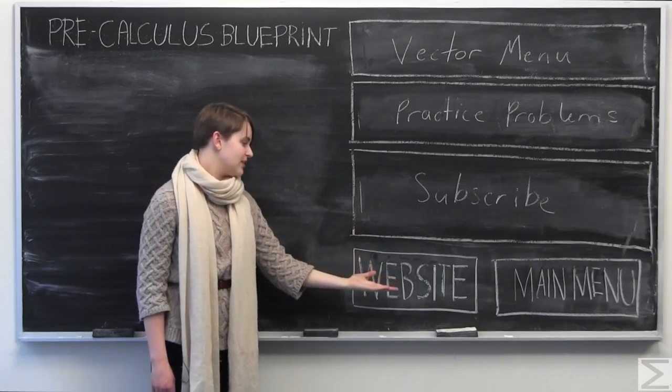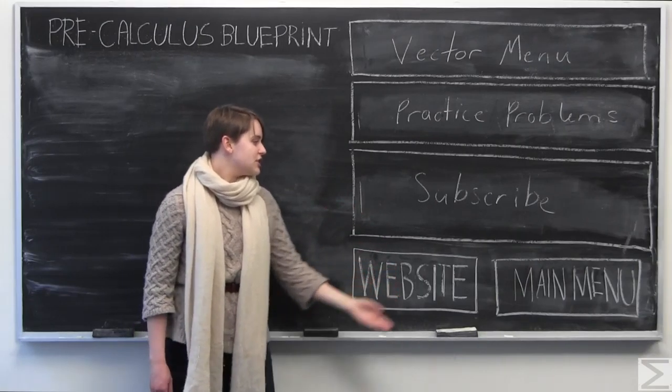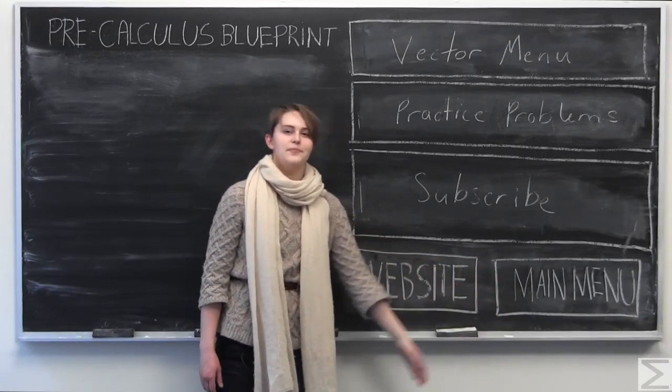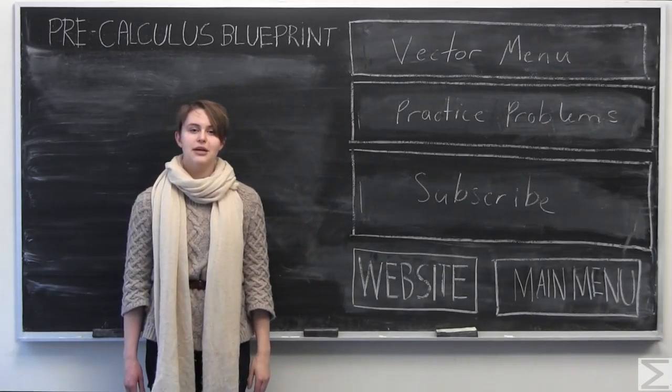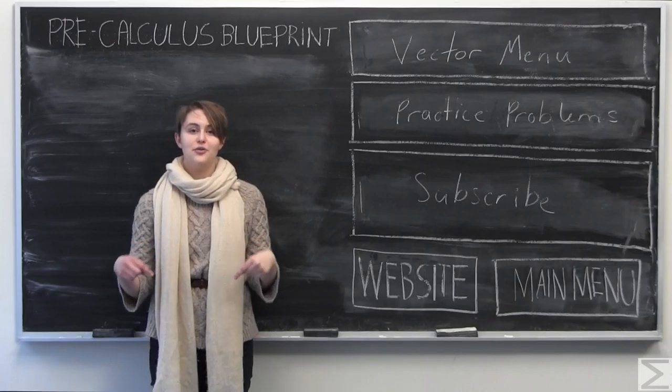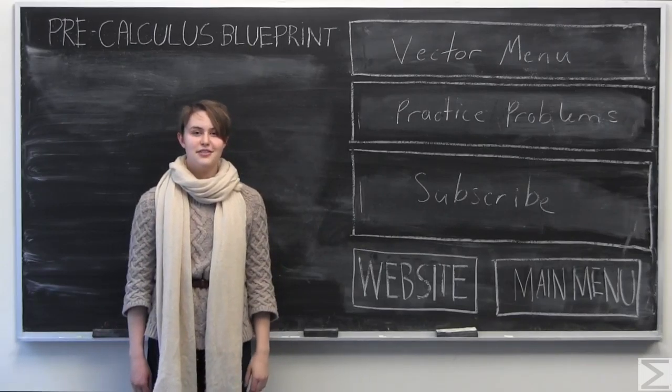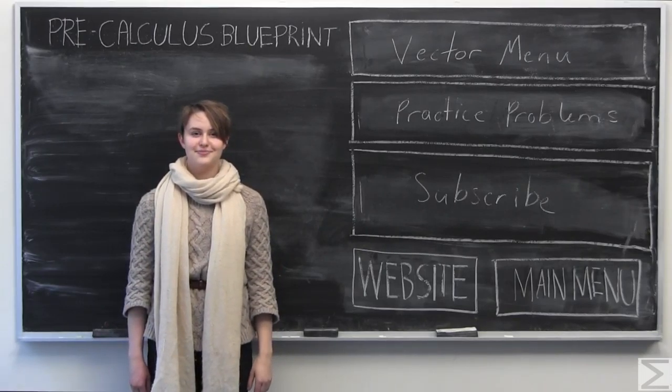To return to the vector menu, click here. To see more additional practice problems worked out, you can click here. To subscribe to our YouTube channel, click this link here. To visit our website, click here. And finally, to return to the main menu, click this link here. And remember, if you haven't already done so, you can purchase the PreCalculus Blueprint by clicking on the link in the description of this video. Remember, it's only $1.95. Thank you for watching.